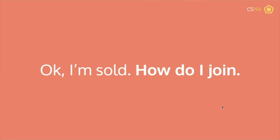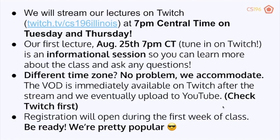So if you're thinking you're sold and want to know how to join, here's all the info you'll need. We will stream our lectures live on Twitch — the link is down below — at 7pm Central Time on Tuesday and Thursday. Live lecture is a lot of fun because we have extra credit opportunities and use quiz software like Kahoot to make the class more interactive. Our first lecture is on August 25th at 7pm Central Time; it is an informational session so you can learn more about the class and ask any questions you might have. If you're in a different time zone, it's not an issue at all — we accommodate for that. The stream is immediately available on Twitch after the live session and we then store the videos on YouTube. Registration opens the first week of classes — if you're interested, be ready, as the class is popular and fills up quick.